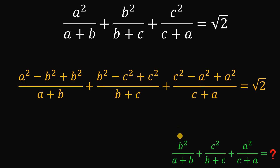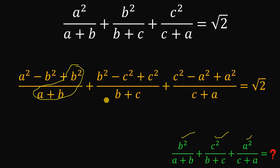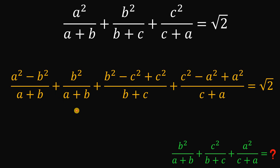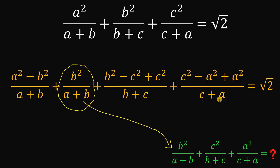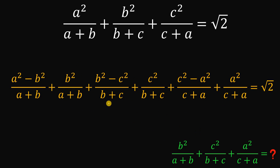Now take note that we want b squared over a plus b, c squared over b plus c, and a squared over c plus a. We will focus on this term and separate it from the original, using the concept of similar fractions. We call this target expression s.